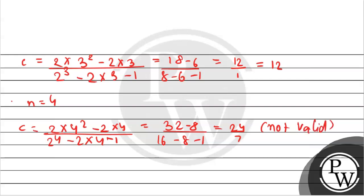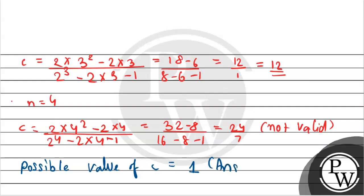The valid c values found are just c = 12. For larger n, testing shows that valid c values become increasingly rare. Thus the number of possible values of c is 1. This is the final answer. Hope you understood it well. Best of luck.